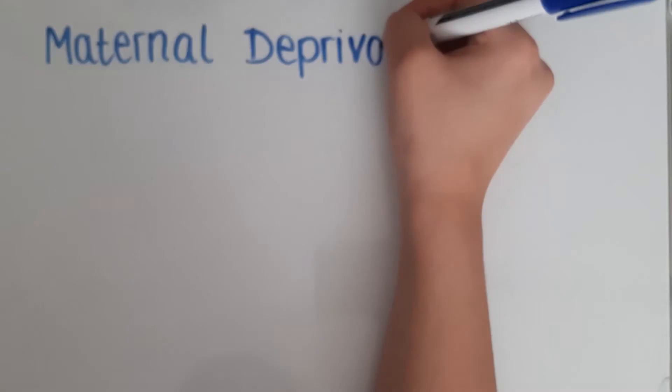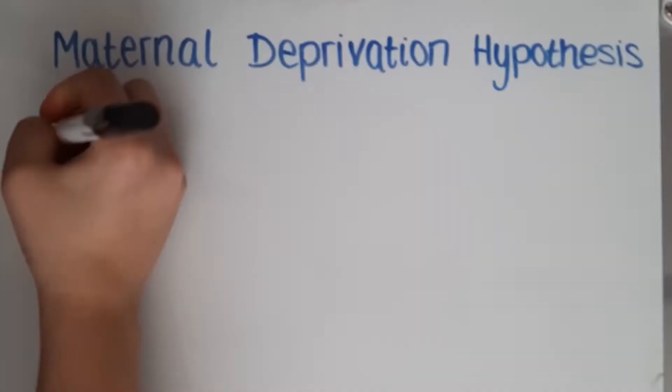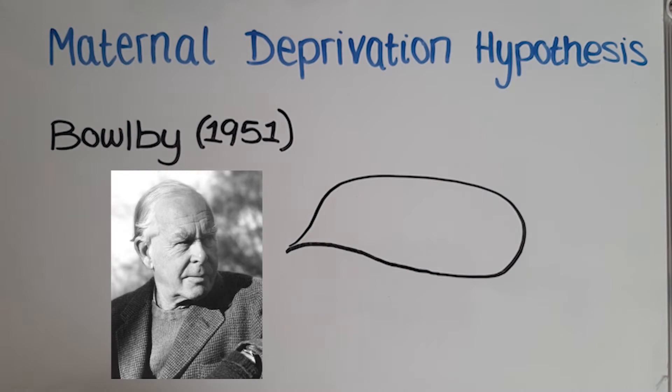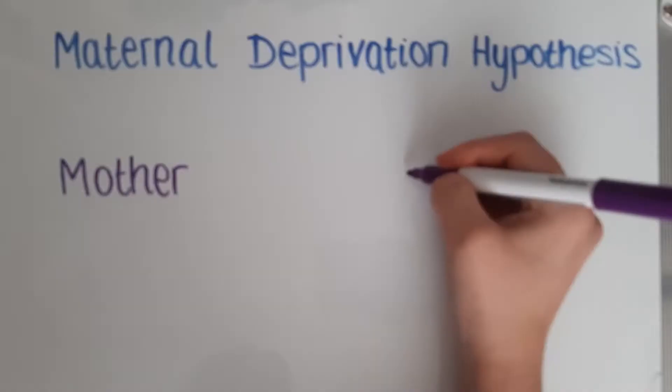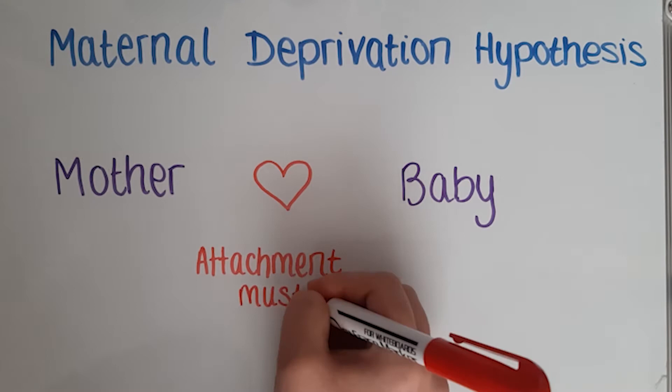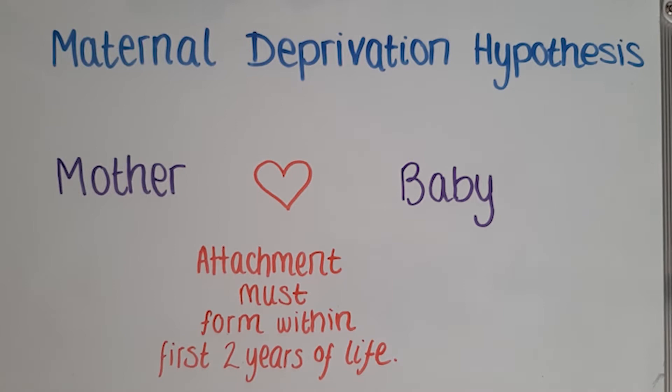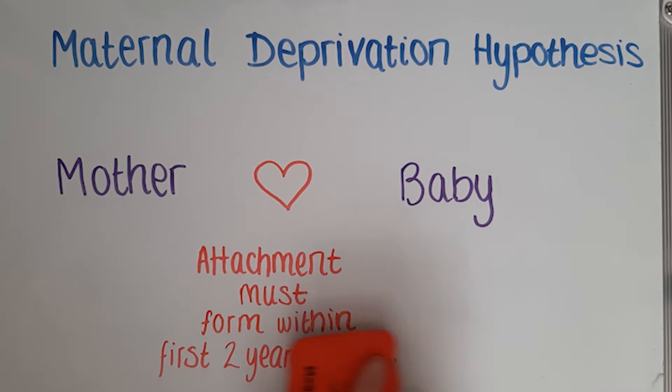Bowlby used the term maternal deprivation to refer to the separation or loss of the mother as well as a failure to develop an attachment. Bowlby 1951 claimed that mothering has a critical period. It is in this period where he suggested attachment must form. He suggested that mothering was almost useless if delayed till after the first two years of life. He believed this risk continued until the age of five.